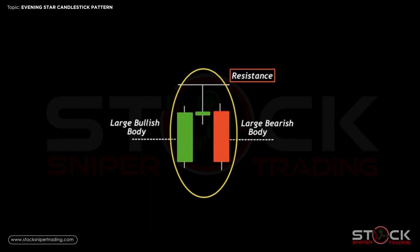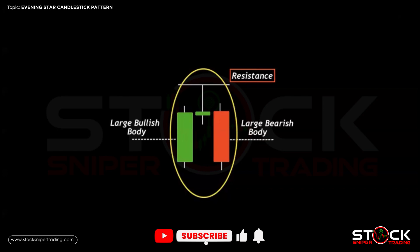The evening star pattern indicates the reversal of an uptrend and is particularly strong when the third candlestick erases the gains of the first candle. In this example, on the left side we have the large bullish body reaching a level of resistance where we encounter selling pressure. This is where the evening star candle forms — it can be either a doji or spinning top candle — and our third candle is the large bearish body which completely engulfs the previous green candle, completing the evening star pattern.